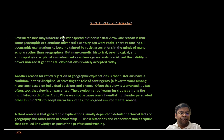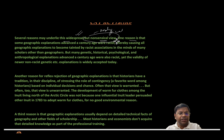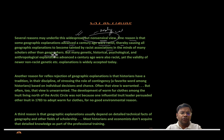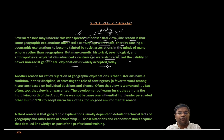Several reasons may underlie this widespread but nonsensical view — the author calls it nonsensical, which is a very important point. One reason is that some geographic explanations advanced a century ago were racist, causing all geographic explanations to become tainted by racist association in the minds of many scholars. But many genetic, historical, psychological, and anthropological explanations advanced a century ago were also racist — yet the validity of newer non-racist genetic explanations is widely accepted today.